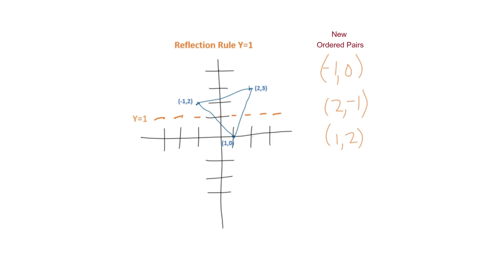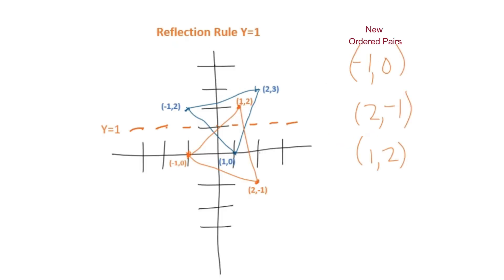Let's plot those points. (-1, 0) would be here, (2, -1) would be here, and (1, 2) would be here. When you plot it and label it, this would be your reflection of the triangle over the y equals 1 line.